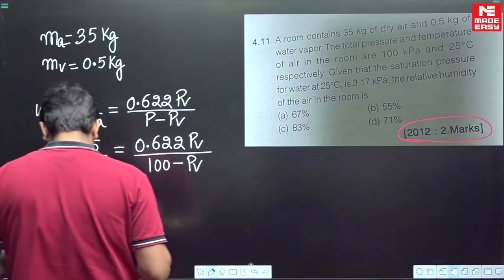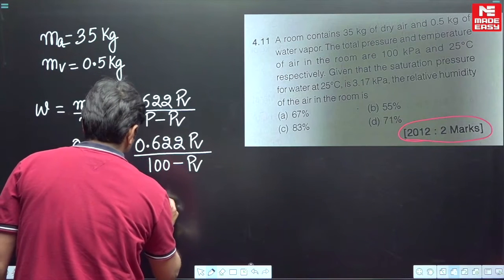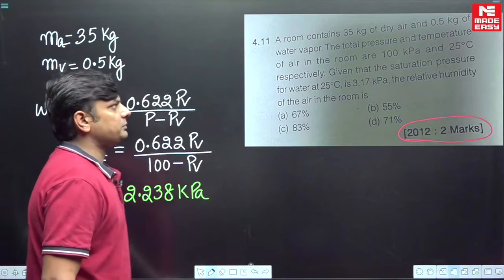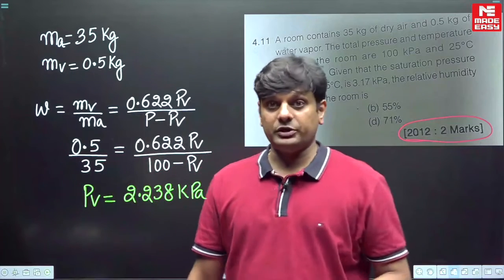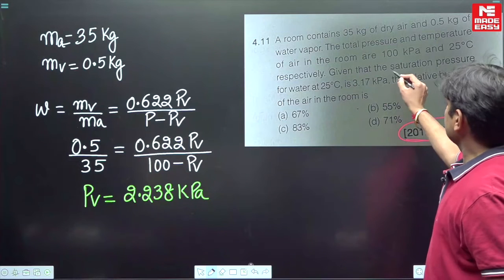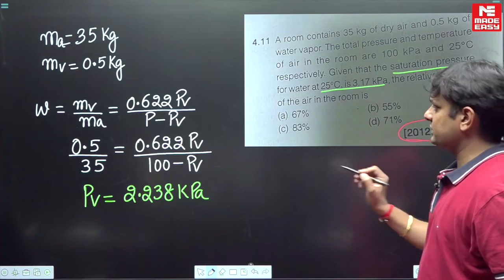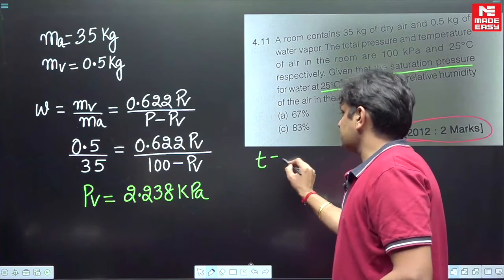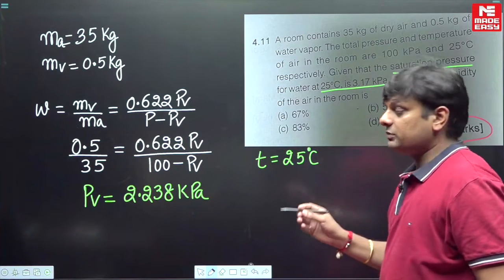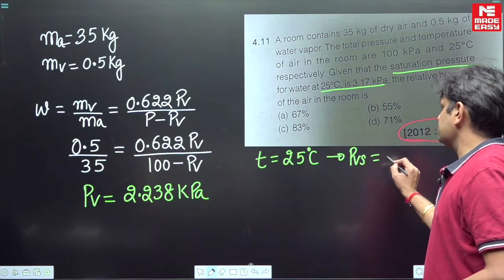Solving this equation, you will get the value of pv = 2.238 kPa. Here pv is the partial pressure of water vapor. Now read the question carefully: the saturation pressure of water at 25°C is given as 3.17 kPa. The 25°C is the dry bulb temperature — the temperature of moist air measured by a simple ordinary thermometer.